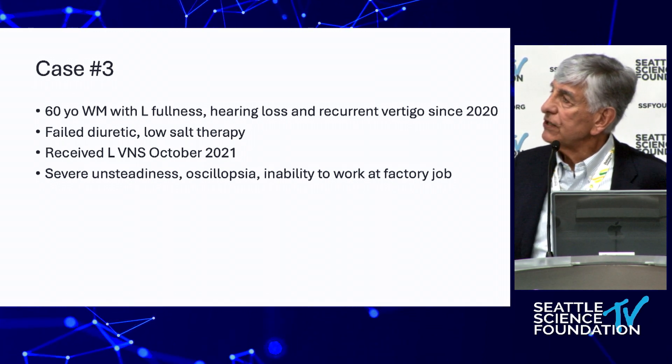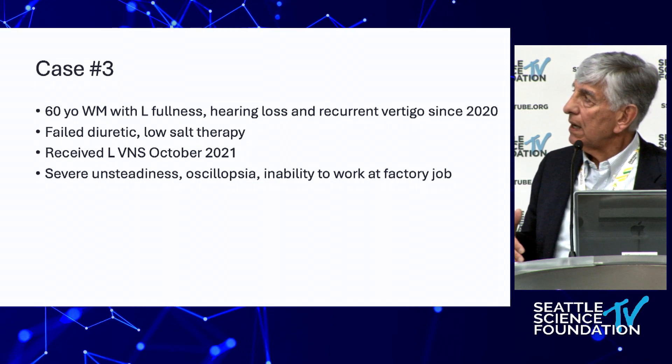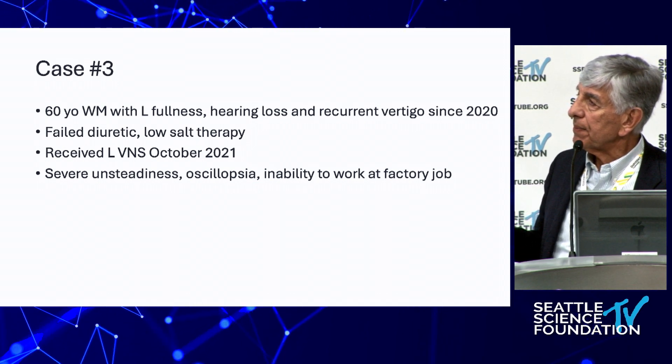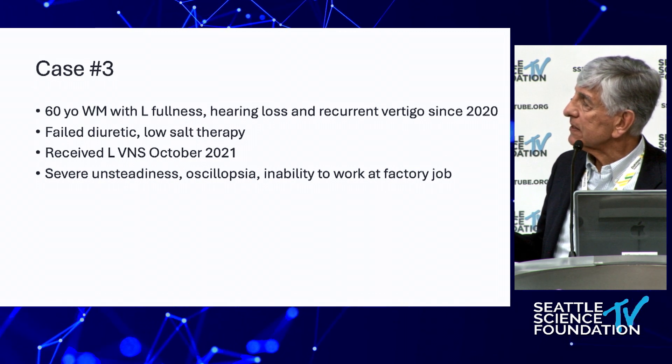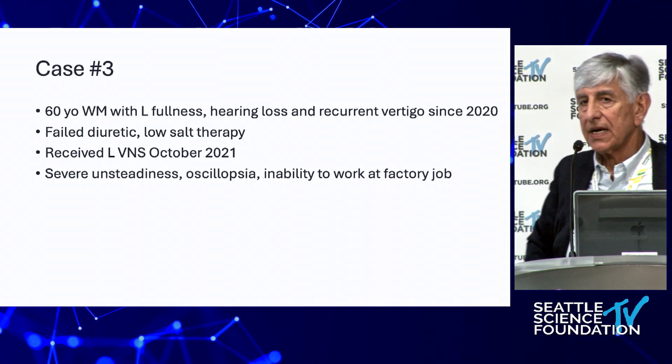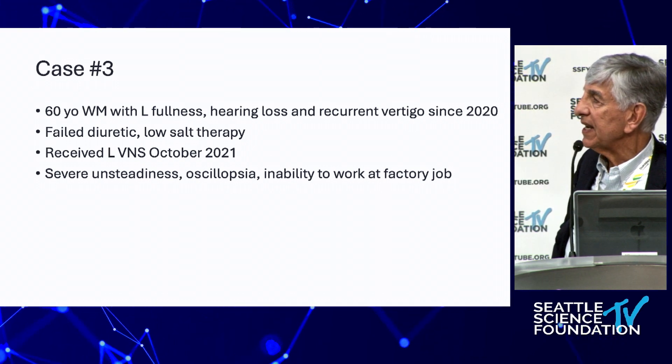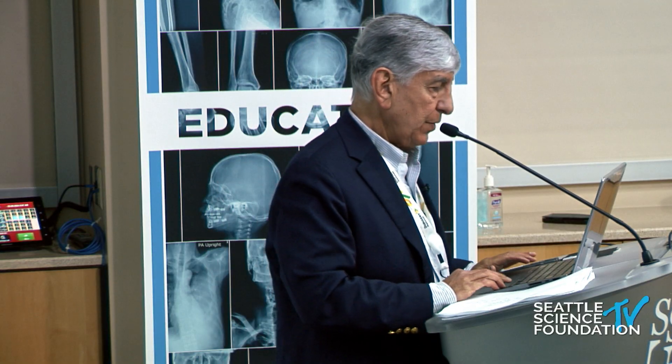Case 3: A patient with a classic history of Meniere's disease who failed diuretic and low-salt therapy, underwent vestibular nerve section, had severe post-operative unsteadiness, but never recovered — never lost the oscillopsia, never lost the unsteadiness, and is unable to work. The biggest concern is possible complete vestibular loss. Clarification: did they have recurrent vertigo or just constant unsteadiness? They have no vertigo — just constant imbalance. Suspicion is complete vestibular loss on the operated side, or possibly bilateral.